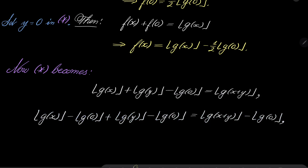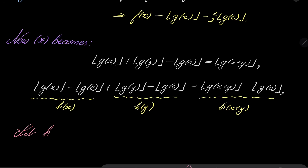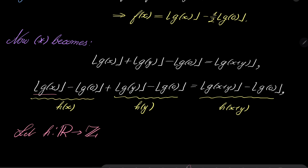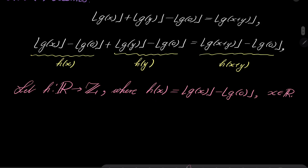Notice that these terms are of the form h(x), these two terms are of the form h(y), and these two terms are of the form h(x+y). So let h go from the set of real numbers into the set of integers, where h(x) equals floor of g(x) minus floor of g(0) for any real number x. Notice that the floor of anything is an integer, and subtracting two integers gives an integer again. It turns out that h satisfies the Cauchy functional equation.